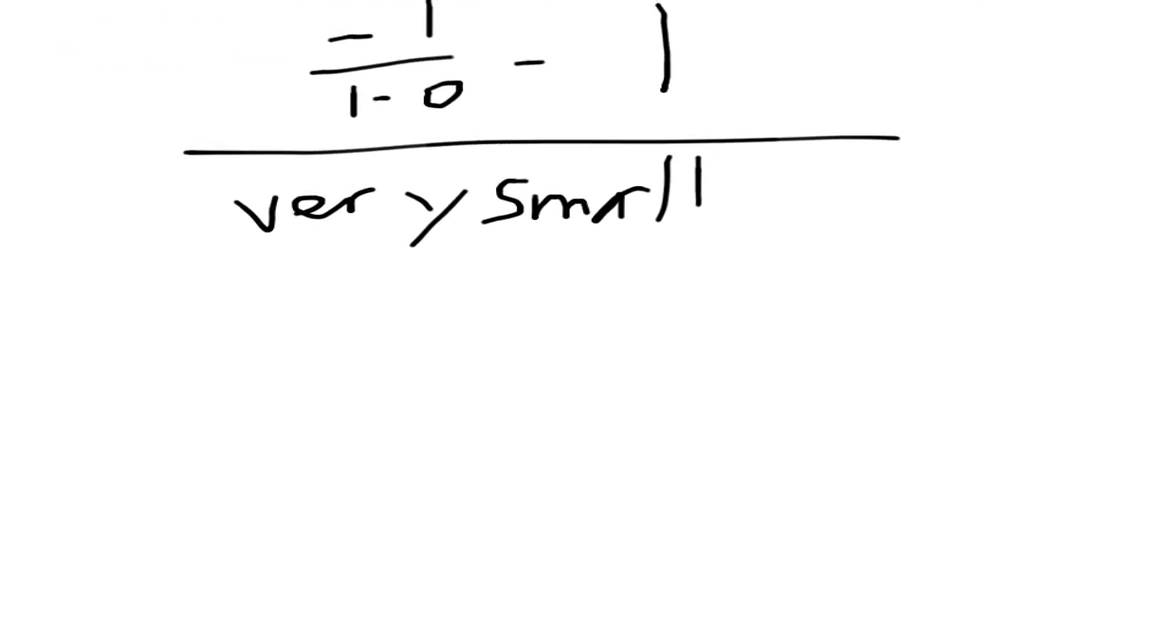So, let's think about what this means. Something very small in the bottom. So, we actually end up with negative 1 minus 1 over a very small number. Or, we could say negative 2 over a very small number. Now, if the bottom is very small, negative 2 divided by something very small is going to look like a very large number.